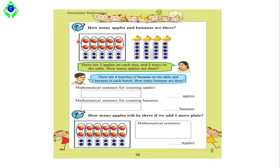At the top of this page, the author has written: 'How many apples and bananas are there?' Dear students, you can see there are a lot of apples, and on the right side there are also a lot of bananas. The question is: how many apples are there, and how many bananas are there?